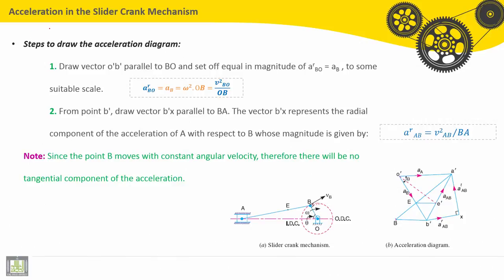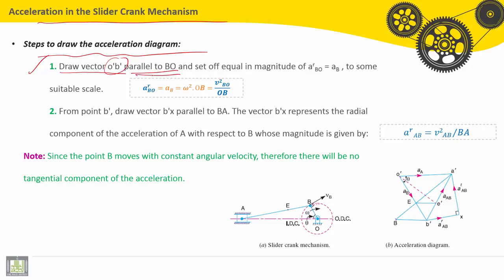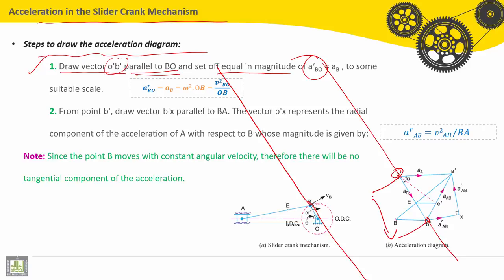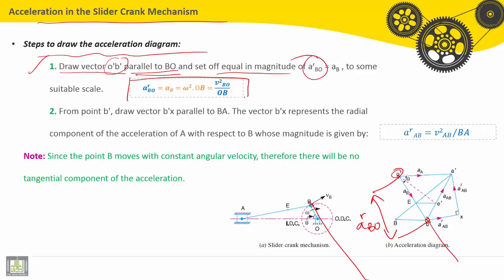We'll continue here with the calculation of acceleration in the slider crank mechanism. Steps to draw the acceleration diagram are the following. We'll start by the first step: we have to draw the vector O dash B dash parallel to BO. O dash B dash should be parallel to BO, and set off equal in magnitude to ARBO, found from this formula, and drawn in some suitable scale.